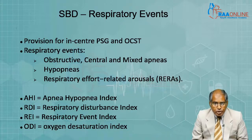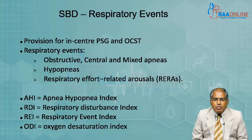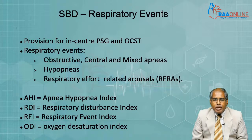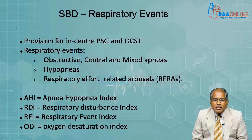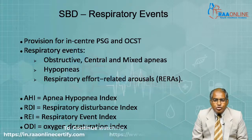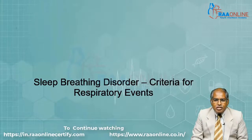The respiratory disturbance index includes apneas, hypopneas, and also RERAs. The respiratory event index is usually used for out-of-center sleep studies, because we cannot have a hypnogram in these studies — we can document respiratory events but not arousals. In type 4 studies, we have the ODI, or oxygen desaturation index, where we only know that there is a desaturation without any respiratory event or arousal being documented. We will now go through the criteria for the various respiratory events.